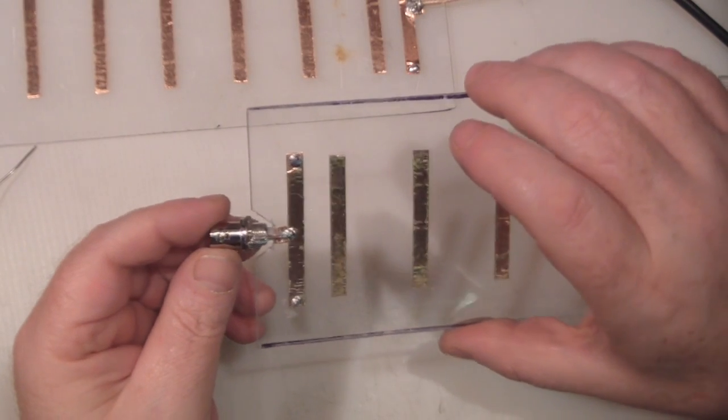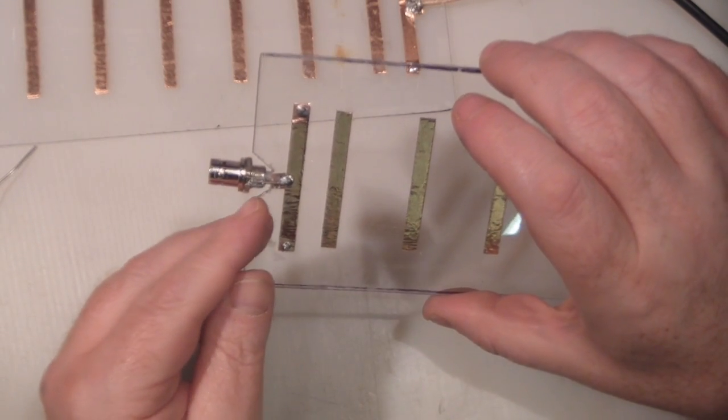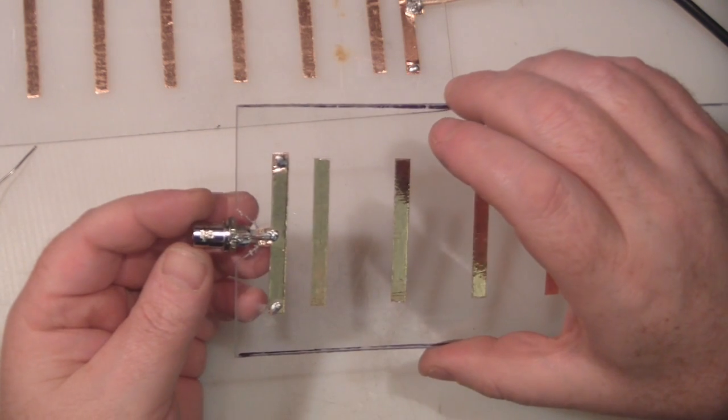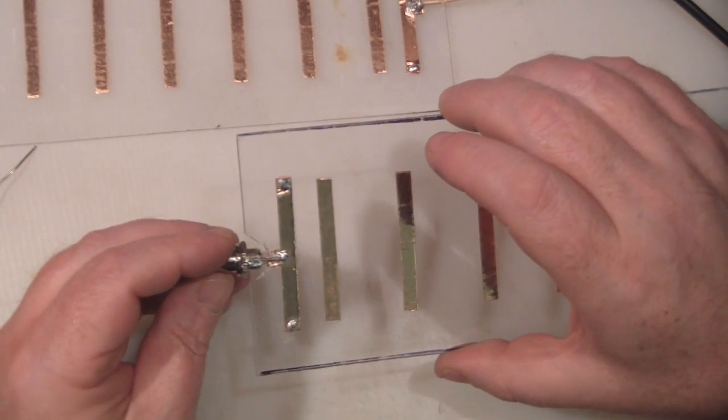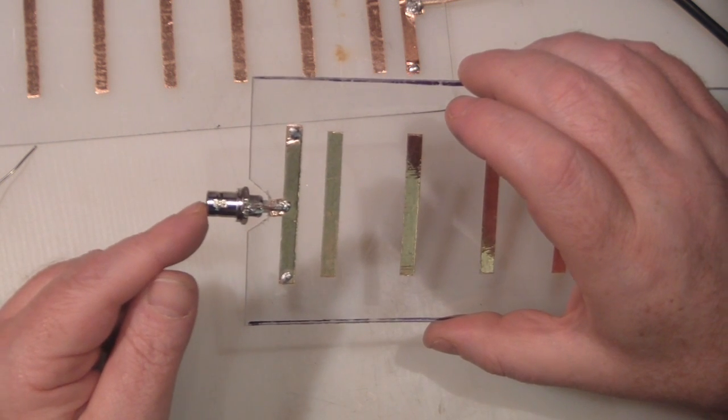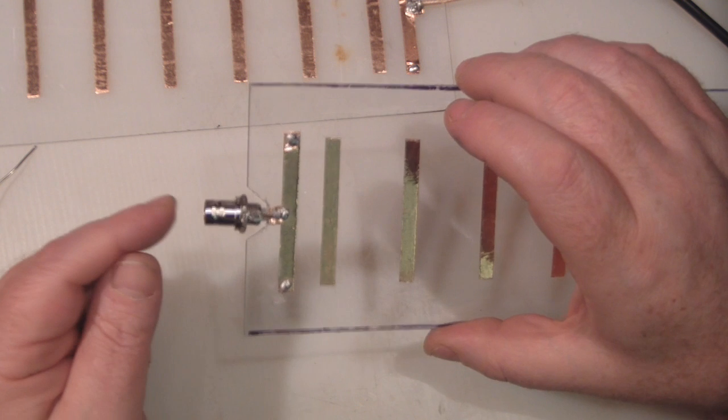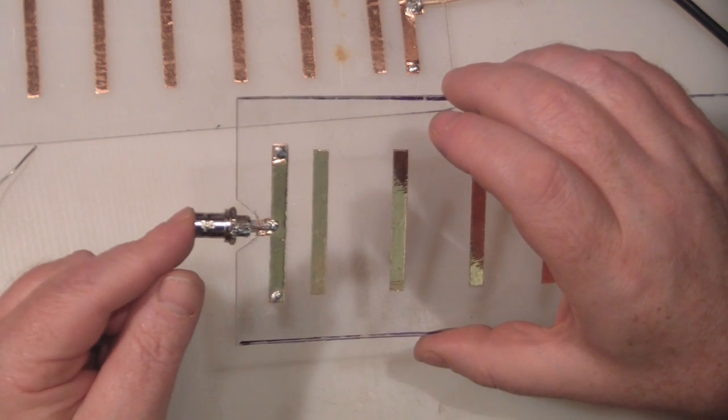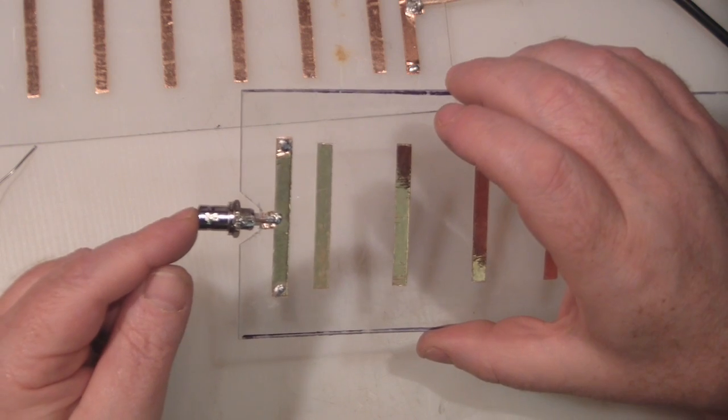So we've got the BNC connector soldered on and what I'm going to do, I'm going to put a little bit of epoxy around here. I've got some epoxy putty just to make sure it's nice and solid in there, not going to snap off because this end of the BNC connector is going to be protruding from the can. It's going to take a little bit of stress because that's where we're going to connect our LMR cable to.